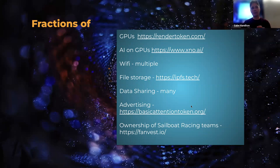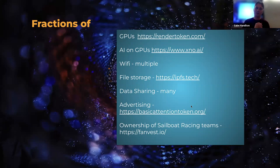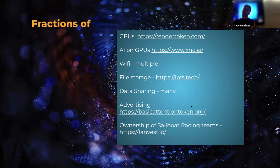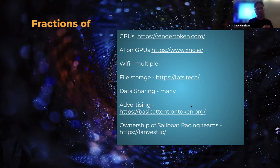File storage is another good one — you can have encrypted files distributed around to other people's storage, or rent out your pile of hard drives. The Interplanetary File System is a nice building block for smart contracts — you can easily store stuff on IPFS. People are doing interesting things with data sharing — medical records, other kinds of data you might want to share with different parties. In the case of medical records, you might allow access to researchers, maybe in an anonymous way. People have been building a lot of really interesting data sharing platforms.